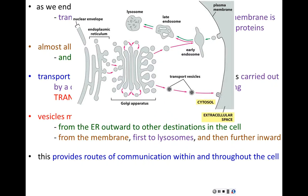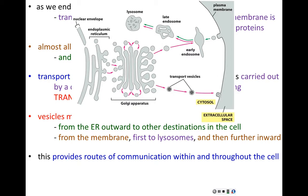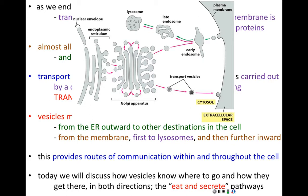These two directions originate from the nucleus and go all the way out of the cell, or come in from the cell and then distribute through the cytoplasm, providing routes of communication within and throughout a cell. Today we'll discuss how vesicles know where their destination is — in both directions: secretion going from inside out, and consumption coming from outside in. This is called the eat and secrete pathways.